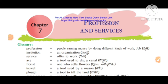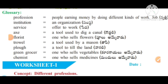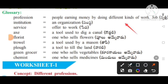Topic: Lesson 20, Worksheet 129. First, let's see the glossary — difficult words and their meanings. Profession means people earning money by doing different kinds of work or job. Institution means an organization. Service means offering work. An axe is a tool used to dig a canal. A florist is one who sells flowers.